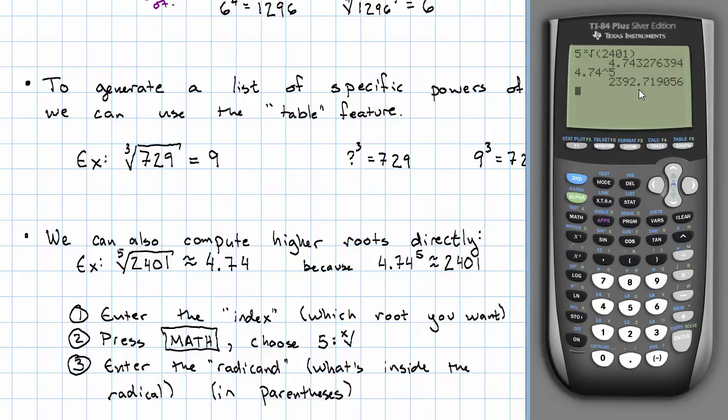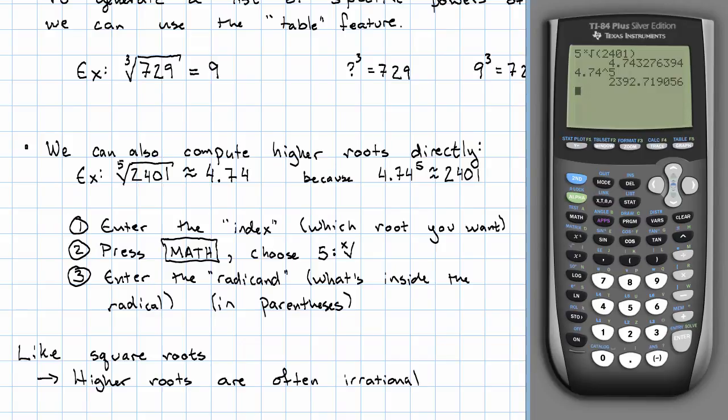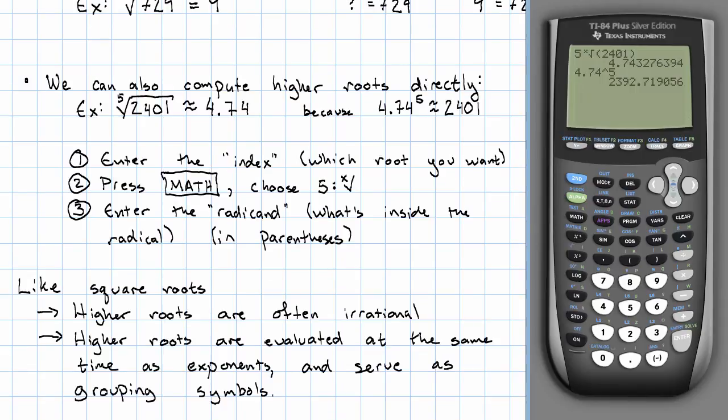Not exactly, but quite close. That's as close as we would expect to get with this rounded answer. So like the square roots, higher roots are often irrational. And like square roots, higher roots are evaluated at the same time as exponents and serve as grouping symbols.